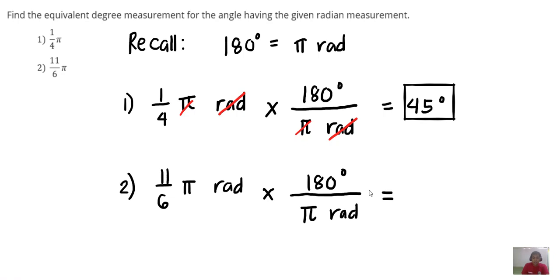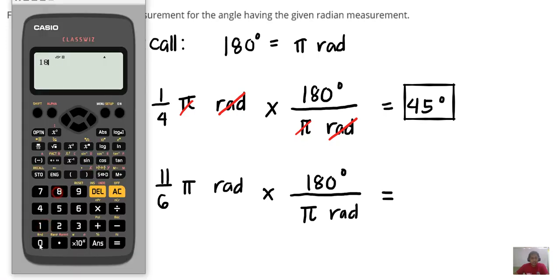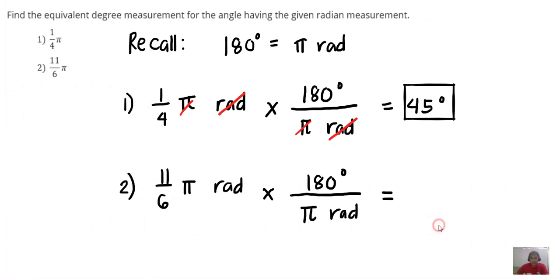So this one is equivalent to 180, since radian and pi will be eliminated. 180 times 11 divided by 6. So 180 times 11 divided by 6. So 330 degrees.